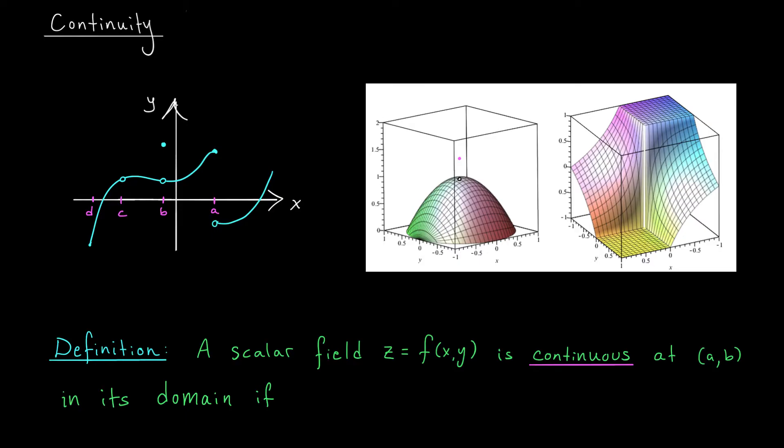Before jumping into the new content, it'll be helpful to recall what it means for a single variable function to be continuous at a point. Intuitively, it means the graph of the function has no breaks. So take a look at this example here. At x equals a, the function is definitely not continuous — we have a major break in the graph.